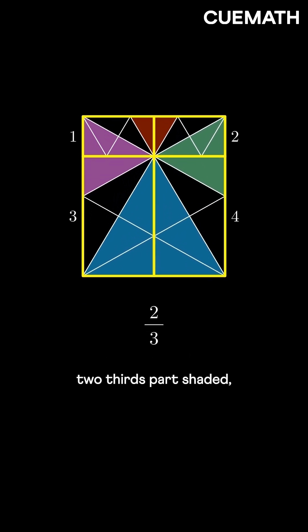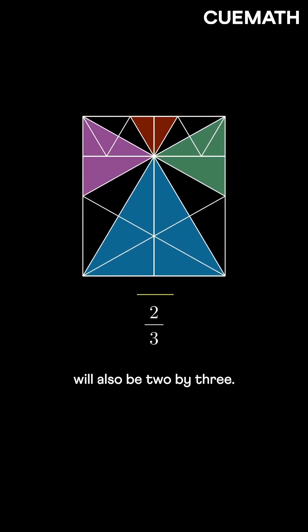As each part has two-thirds part shaded, the total shaded fraction will also be two by three.